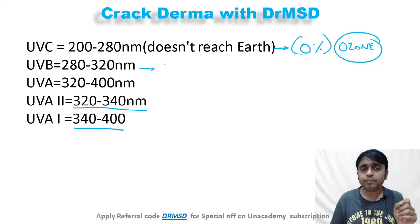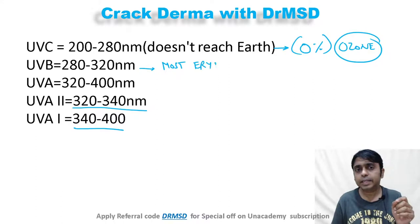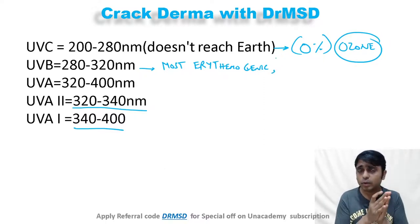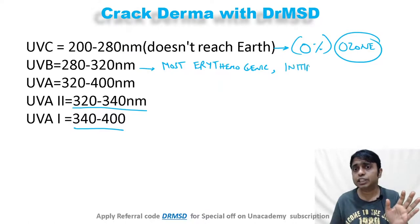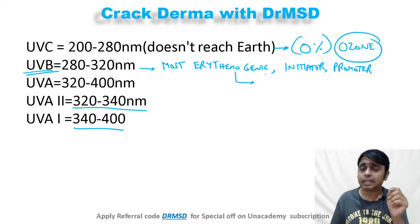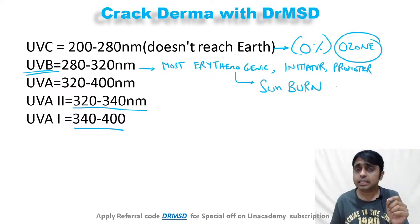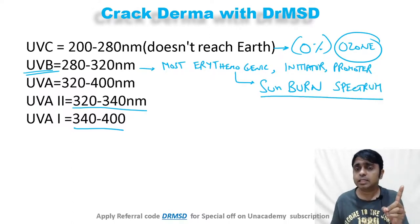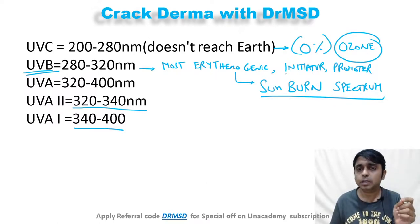UVB is the most erythemogenic radiation and also the most important cause of skin cancer development, because UVB acts both as an initiator and a promoter of skin cancer. Since it causes the maximum sunburn, UVB is also called the sunburn spectrum. Please remember: most sunburn is due to UVB radiation, and skin cancers are also associated with UVB.